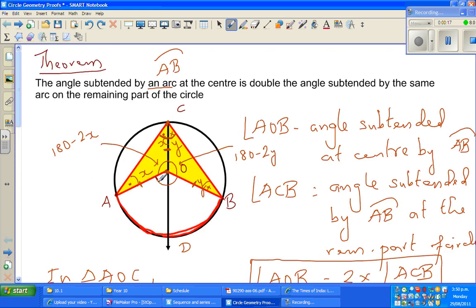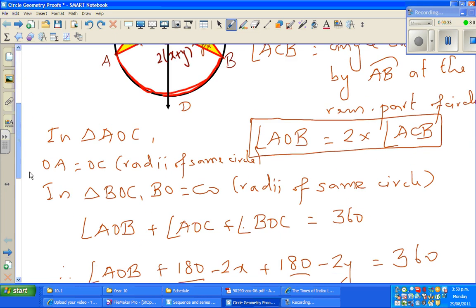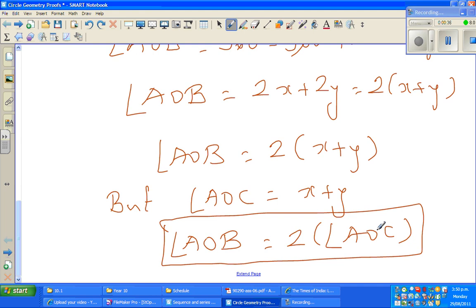We proved that this angle, if this is x and this is y, this angle is 2 times x plus y. So we saw that this angle AOB is 2 times angle ACB. In the previous video, I proved angle AOB is 2 times angle ACB.